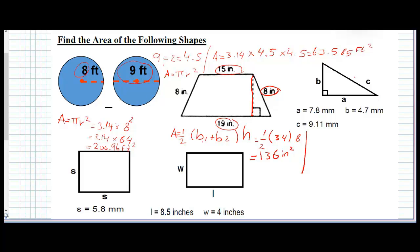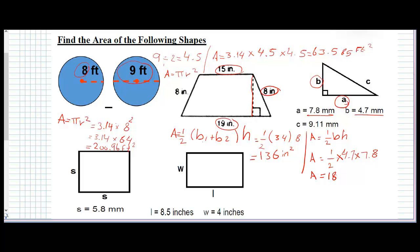Next we have a triangle. The area of a triangle equals half times base times height. The base is 4.7 and the height is 7.8. The area of the triangle equals 18.33 millimeters squared.